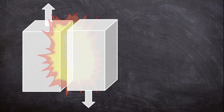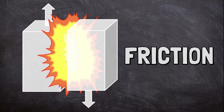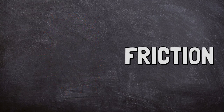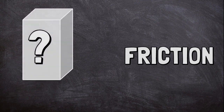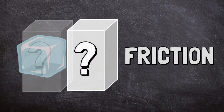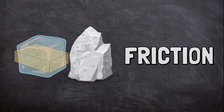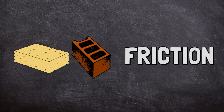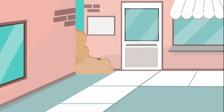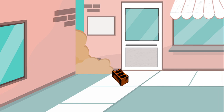When two objects rub together, a force called friction slows down their motion. The amount of friction changes depending on the weight and texture of the objects — are they smooth or rough? Soft or hard? Think about sliding a large brick along the sidewalk. You would have to push quite hard on the brick to get it to move at all. The brick is heavy and rough, and when it touches the rough sidewalk, there's a lot of friction between them that slows down the brick's movement.